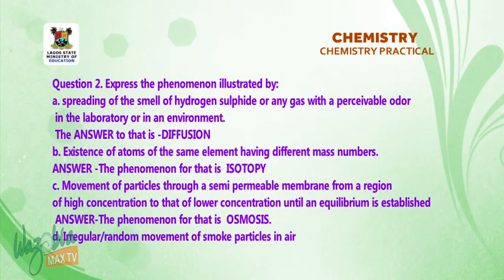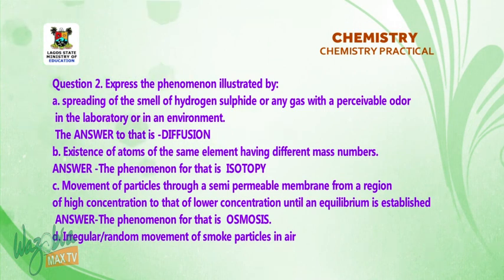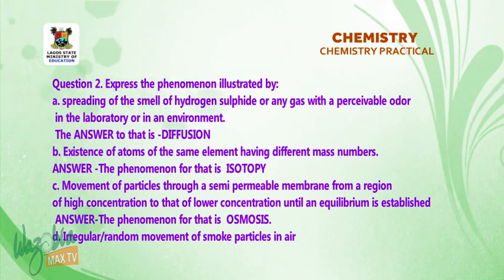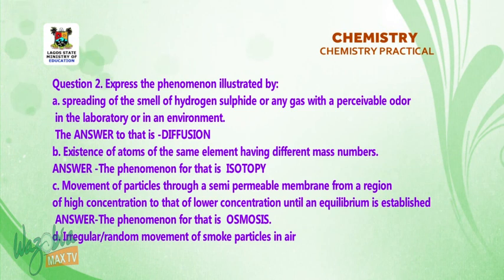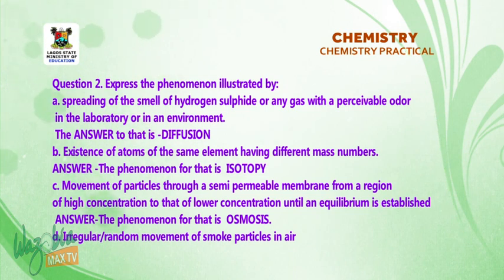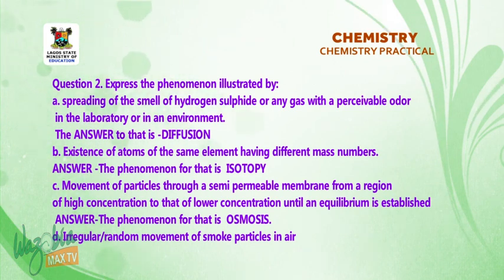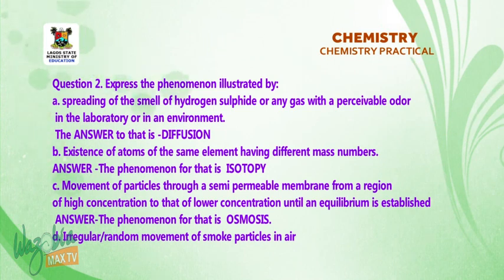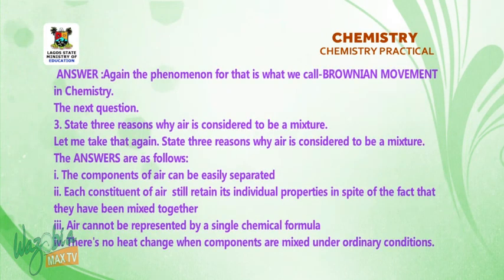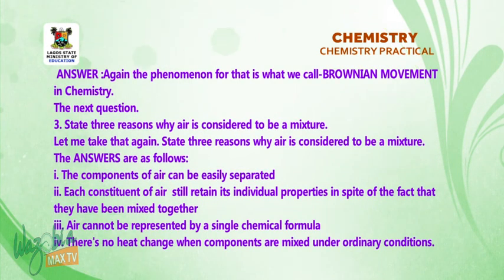Question 2: express the phenomenon illustrated by the following. A — spreading of the smell of hydrogen sulfide or any gas with a perceivable odor in the laboratory: the answer is diffusion. B — existence of atoms of the same elements having different mass numbers: the phenomenon is isotopy. C — movement of particles through a semi-permeable membrane from a region of high concentration to lower concentration until equilibrium is established: the phenomenon is osmosis. D — irregular or random movement of smoke particles in air: the phenomenon is Brownian motion.